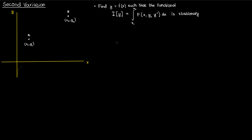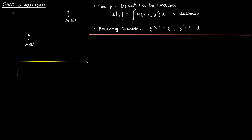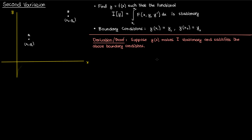In addition to the fact that y makes this functional stationary, there's another condition we have to take into account when determining y: the boundary conditions. At x1 our function y(x) has to equal y1, and at x2 our function has to equal y2. We will suppose that our desired function — which makes i stationary and satisfies the relevant boundary conditions — is given by y. Another name for y is the extremal, because it's the particular function that makes our functional stationary or extreme.